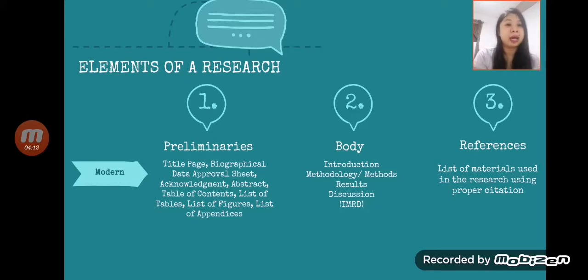Again, the traditional has five chapters, but for the modern we only have four chapters which is the IMRAD. You can see also that from the traditional, the results and discussion are partnered, but for the modern they are separate. But for the preliminaries, more or less they are similar.